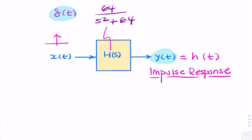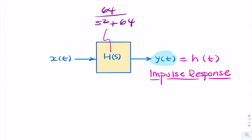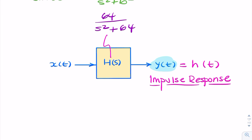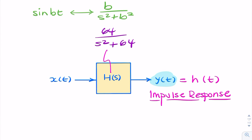The easiest way to do that is to use the Laplace transform table. We should be looking for something that has a number in the numerator and s squared plus something in the denominator. The closest thing we have in the Laplace transform table is s squared plus something else squared in the denominator, where that something else, b, will be 8.